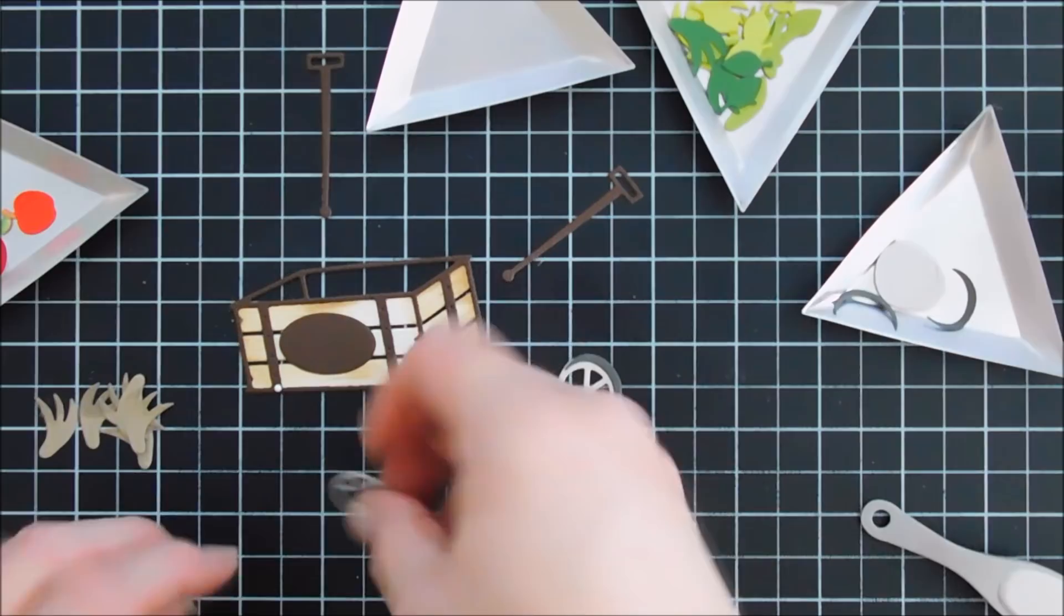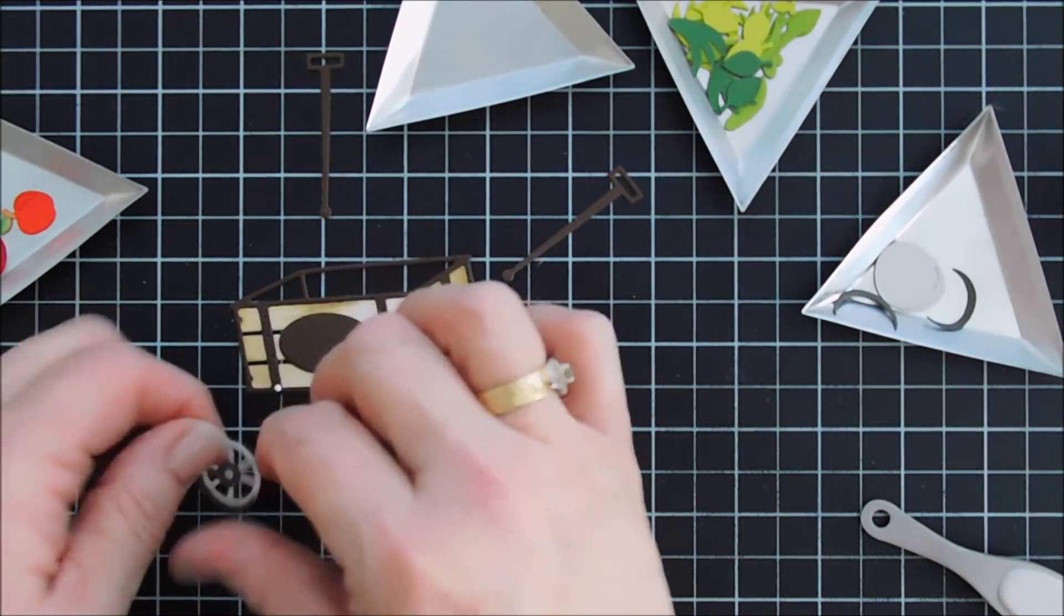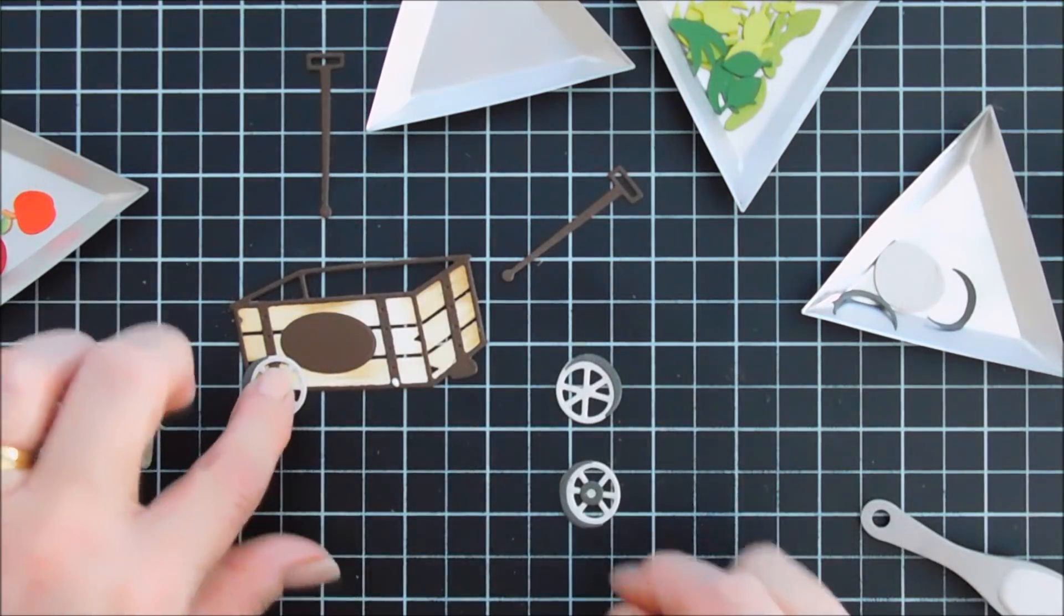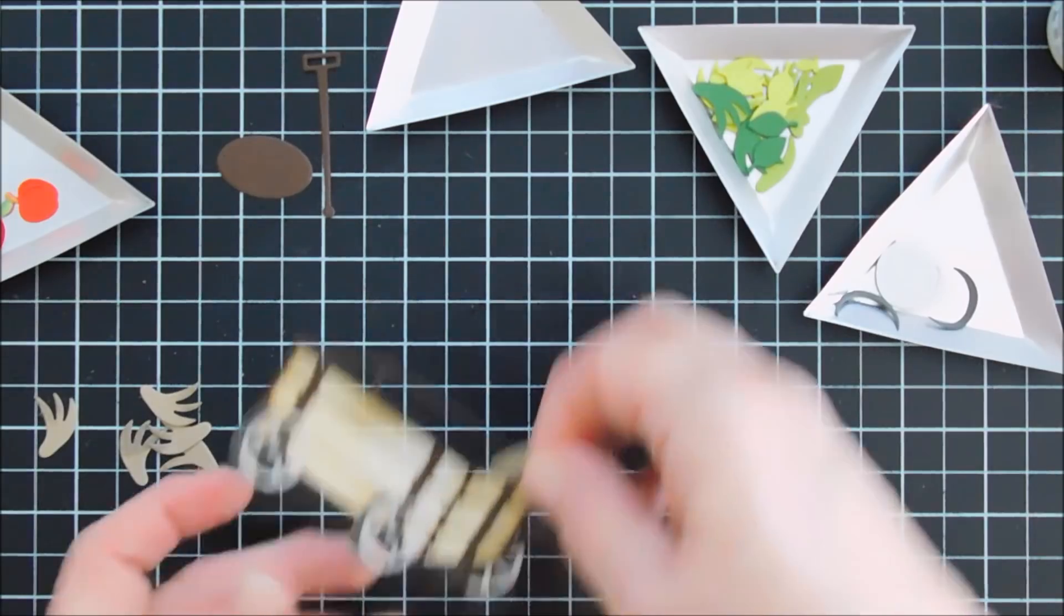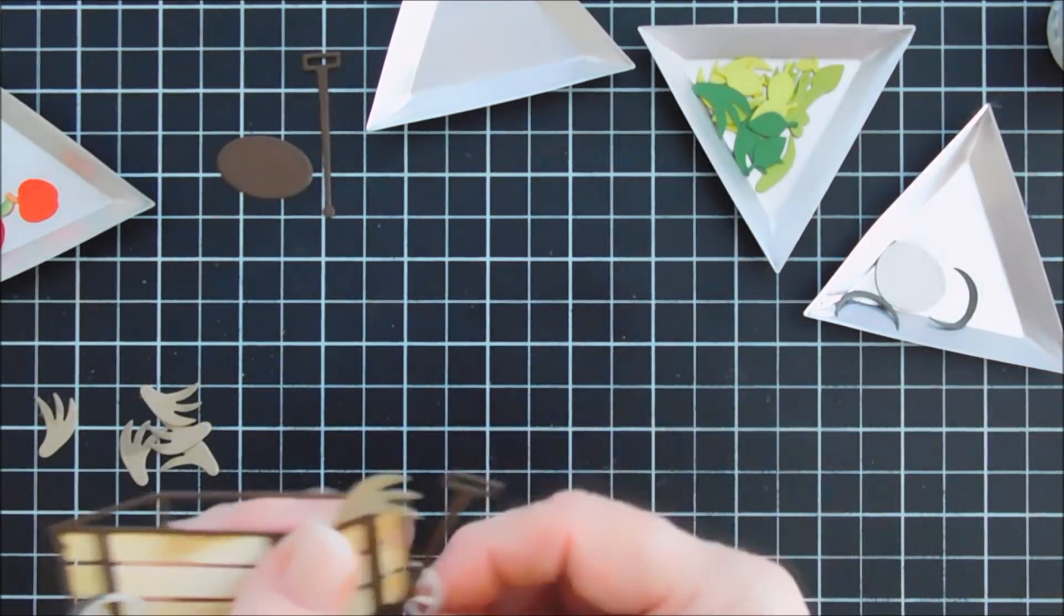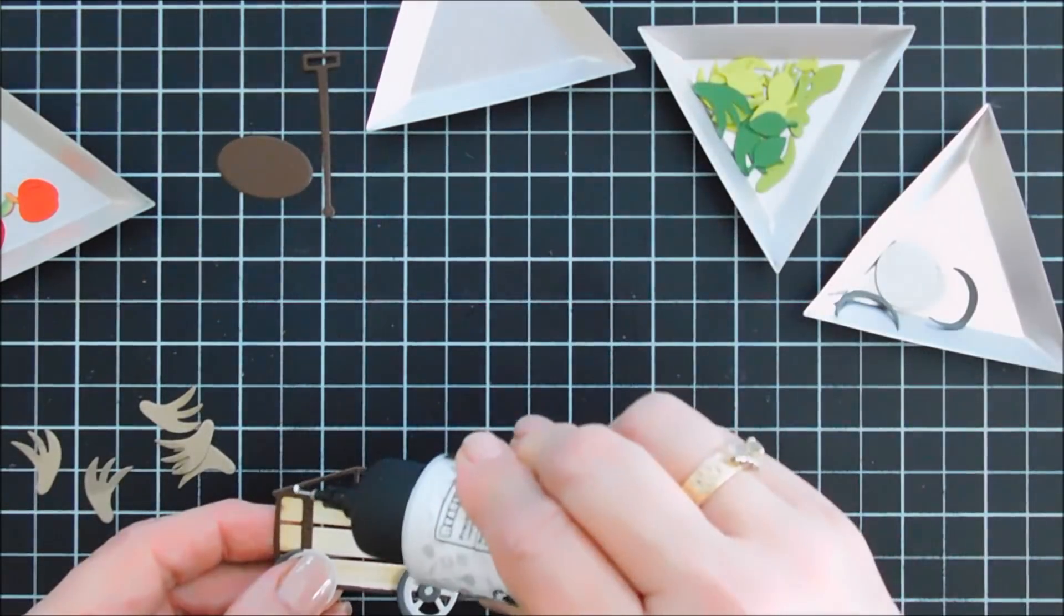To attach them it's super easy. If you wanted to use a brad you very well could. I think that would be adorable. Just use the donut hole as a guide and just connect it to your cart that way. Or you could just glue it down like I'm doing here. Okay I went ahead and add my third wheel. I don't think we need a fourth wheel. So that's good.